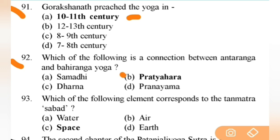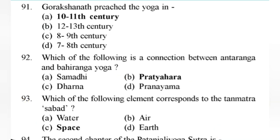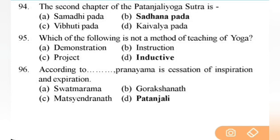Which of the following is a connection between Antaranga and Bahiranga yoga? Right answer is B — Pratyahara — very important. Next: which of the following element corresponds to the Tanmatra Shabda? Right answer is C — space. Next: the second chapter of Patanjali Yoga Sutras is Sadhana Pada. Next: which of the following is not a method of teaching yoga? Right answer is D — inductive.